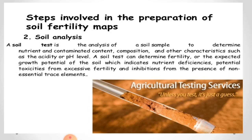Soil composition and characteristics such as acidity or pH level are assessed. The second step is to analyze the soil sample in the laboratory. After analyzing the soil sample, it indicates how much quantity of nutrients are present in that soil — nutrients like available nitrogen, phosphorus, and potassium. It also indicates the soil pH and soil EC. A soil test can determine the fertility or expected growth potential of the soil, which indicates nutrient deficiency.